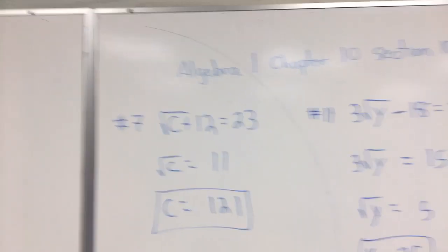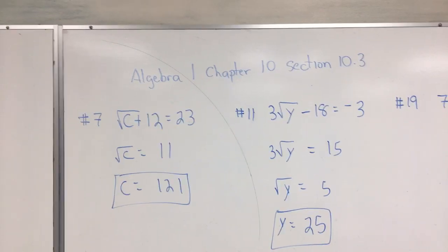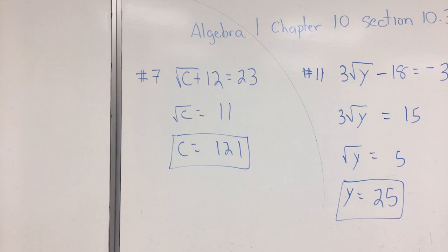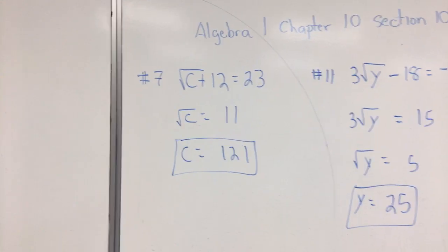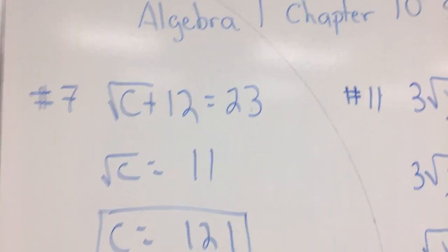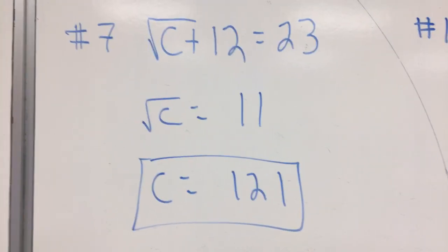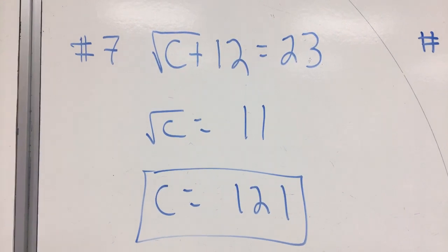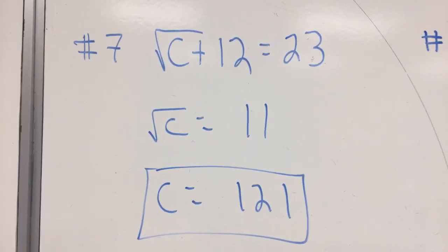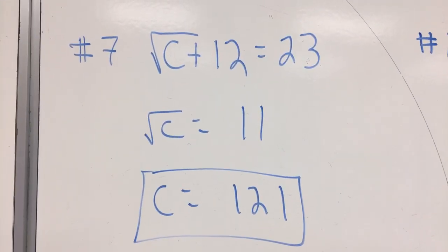Algebra 1, Chapter 10, Section 10.3. This is number 7 out of 10.3. You start off with the square root of C plus 12 is equal to 23. Now see that next step? How do you think I got there? I subtracted 12 from both sides, and now I got the square root of C is equal to 11.